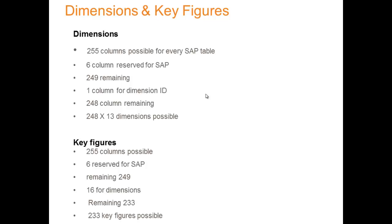Coming to key figures: we can have around 255 columns possible, 6 reserved for SAP, leaving 249. Subtract 16 for dimensions, and 233 key figures are possible. This is an advantage of the extended star schema. With 248 into 13 dimensions, we overcome the limitation of dimensions in star schema. The master data is placed outside the cube, so it can be reused anytime, anywhere, and there are no alphanumeric characters inside the cube, which drastically improves performance.